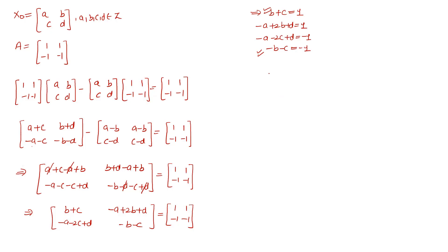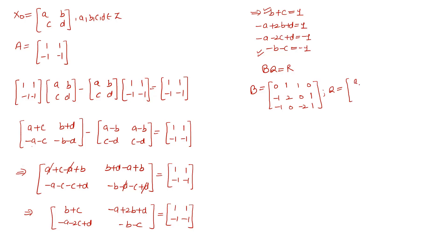We now have a system of linear equations Bq = r, where B is the coefficient matrix [[0,1,1,0],[-1,2,0,1],[-1,0,-2,1]], q is the column vector [a, b, c, d]^T, and r = [1, 1, -1]^T. We construct the augmented matrix [B|r] = [[0,1,1,0|1],[-1,2,0,1|1],[-1,0,-2,1|-1]].